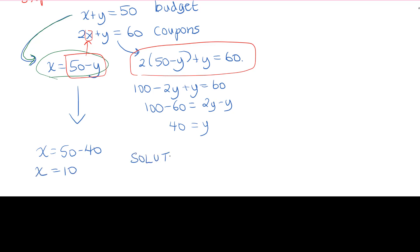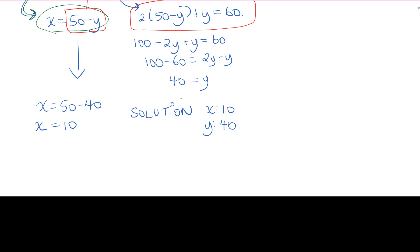So the solution is that we should buy 10 units of item x and we should buy 40 units of item y for maximum utility. Let's say this was butter and bread. That might make sense. So we should buy 4 times the amount of bread than butter.